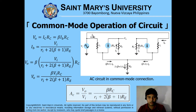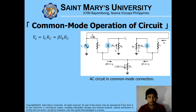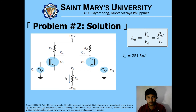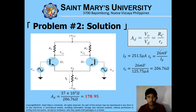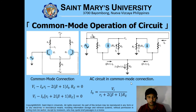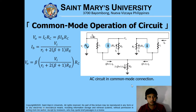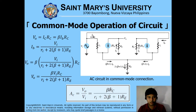Solving for the voltage gain by manipulating that equation, we have a more complex AC voltage gain for the common mode circuit: beta times RC divided by (RI plus twice of (beta plus 1) times RE). For comparison: on the single-ended, we have RC divided by twice of RE; the double-ended is RC divided by RE; and in common mode operation, the voltage gain equation is much more complex.